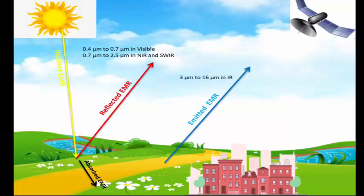As incident electromagnetic radiation comes from the sun to the earth, there are also clouds, dust particles, and many things in the atmosphere. Some portion of this incident electromagnetic radiation can be scattered by the clouds or atmosphere. That scattered electromagnetic radiation mostly lies in the microwave region of the electromagnetic spectrum.